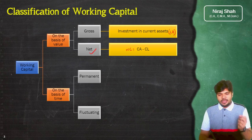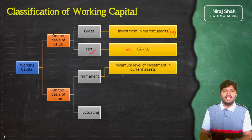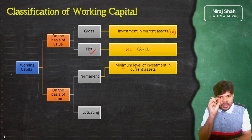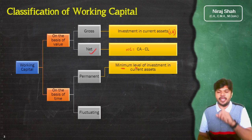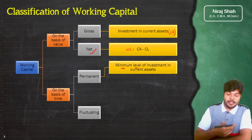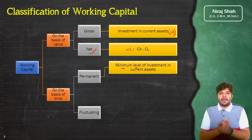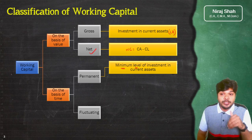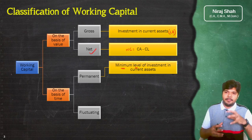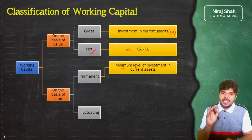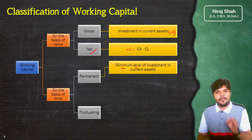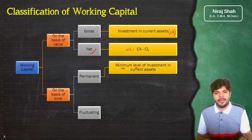Permanent working capital वो है — it is such a minimum level of investment in current assets जो आपको हमेशा करना ही पड़ेगा। जैसे rent की deposit हमेशा देके रखनी पड़ती है, supplier से goods खरीदने के लिए distributor को deposit देनी पड़ती है। कुछ पैसा timely salary, bill payment, और tax payment के लिए भी रखना पड़ता है। ये सब minimum level of working capital है जिसके बिना business चल ही नहीं सकता — इसे permanent working capital कहते हैं।